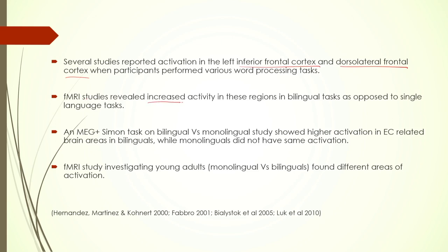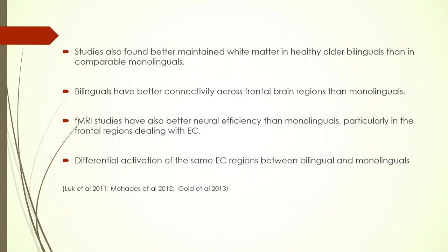Various fMRI studies have shown increased activity in these executive control regions in bilingual tasks as opposed to single language tasks. One study using MEG plus Simon task on bilingual versus monolingual populations showed higher activation in executive control-related regions in bilinguals. Monolinguals did not have comparable activation in those brain areas responsible for executive control. Similarly, fMRI studies investigating young adults also found different patterns of activation for monolinguals versus bilinguals.